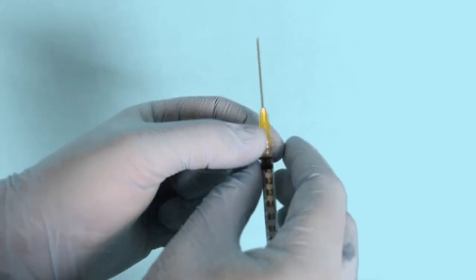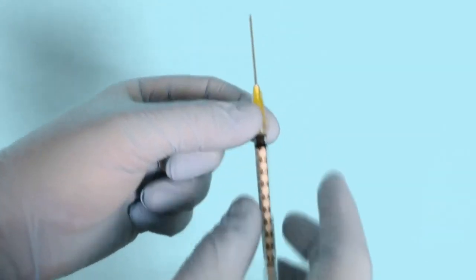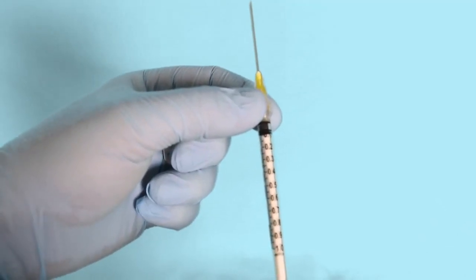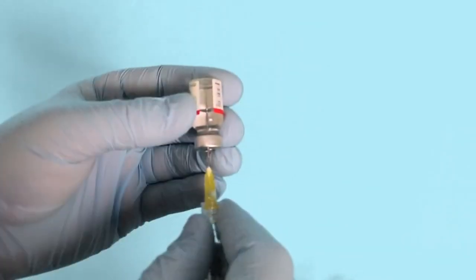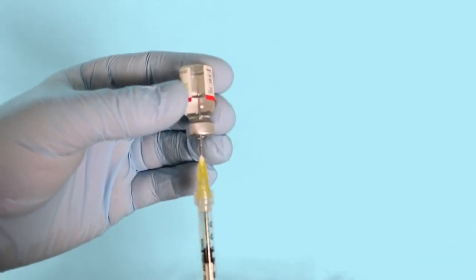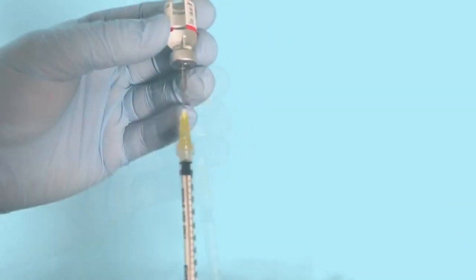The adult epinephrine autoinjector dose is 0.3 mg, so in this case we will draw up 0.3 ml of air before injecting it into the empty space above the fluid line. Then draw up your intended dose.